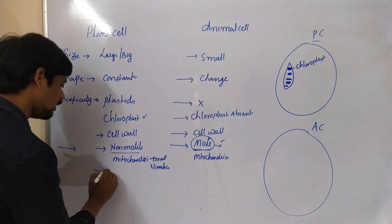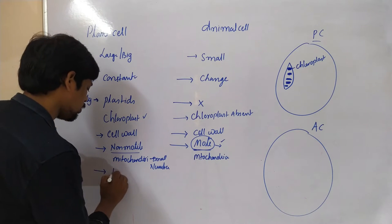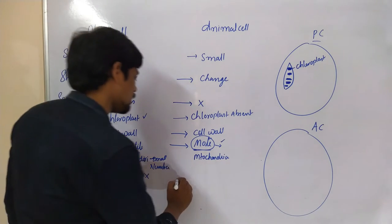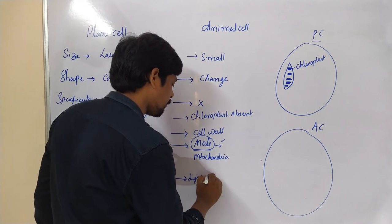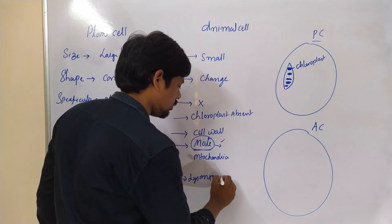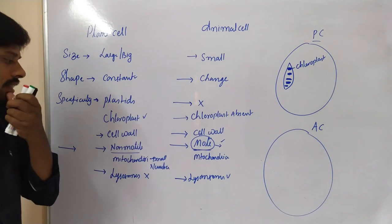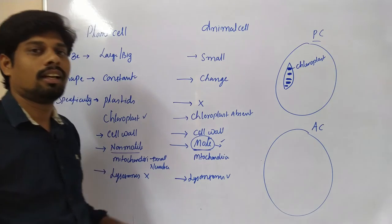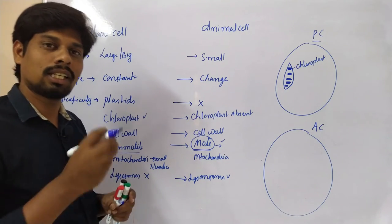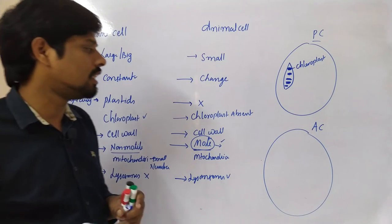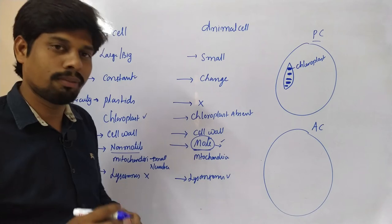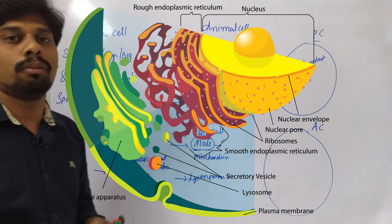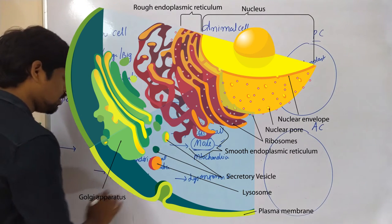Coming to another organelle — lysosomes. Lysosomes are present in the animal cell whereas they are absent in the plant cell. Lysosomes are organelles containing specialized enzymes essential for killing pathogenic organisms that enter the body or cell.